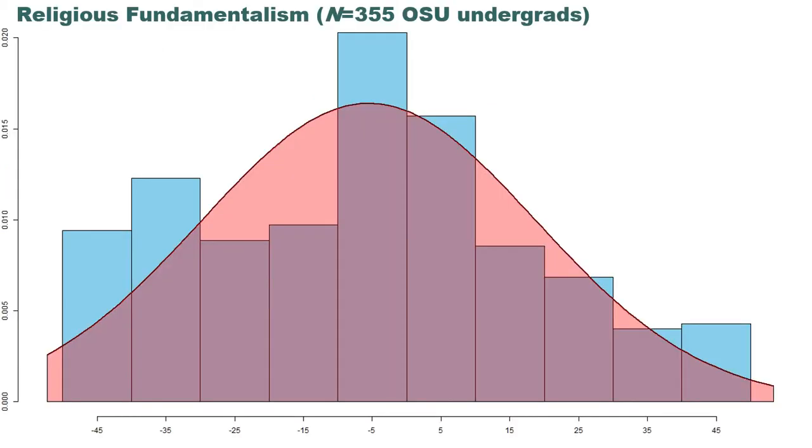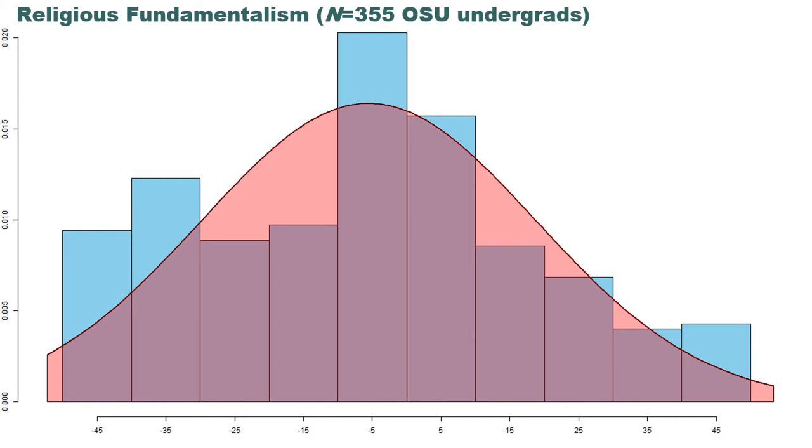So religious fundamentalism from the same data set, you'll notice that data is not as normal. Look at that big gap there that doesn't fit. And that stuff's sticking out there, and that stuff's sticking out there. That's pretty bad. But it is pointy in the middle. And maybe some people would say, let's just use the normal approximation anyway. So this is a religious fundamentalism score you can get. And it's similar to the right-wing authoritarianism scale developed by the same people even.